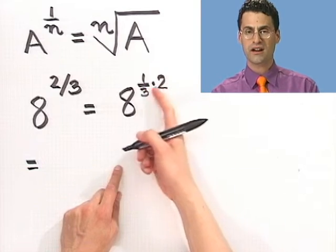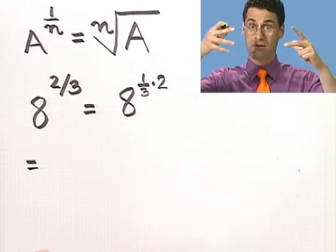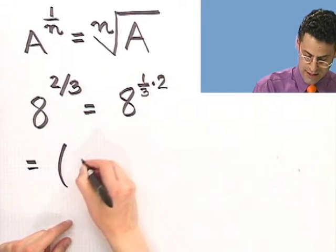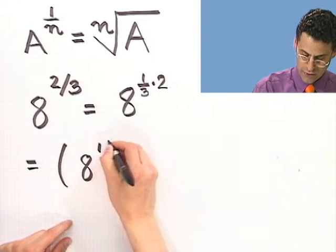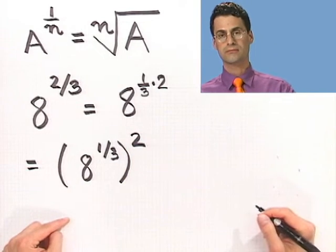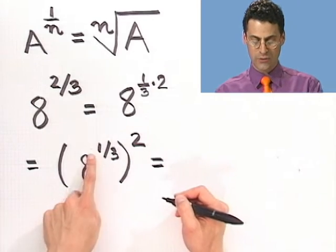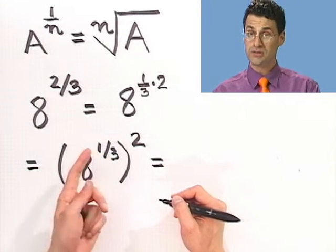And if I have a product of exponents, that means I've got something to a power all raised to a power. So I could write it like this. 8 to the 1 third power all to the 2 power. Now, what do I do here? Well, now I've got to take the 1 third power means I'm taking a root. And in this case, the cube root.